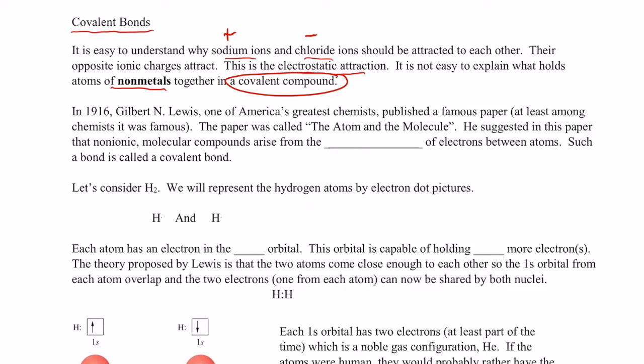In 1916, Gilbert N. Lewis, one of America's greatest chemists, published a famous paper. The paper was called The Atom and the Molecule. He suggested in this paper that non-ionic molecular compounds arise from the sharing of electrons between atoms.